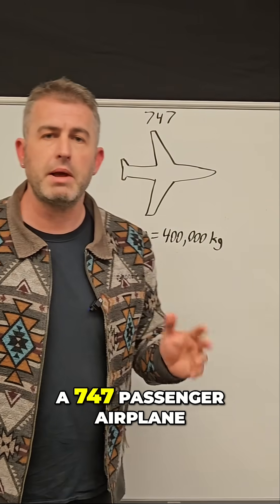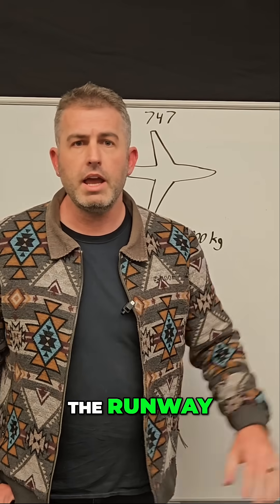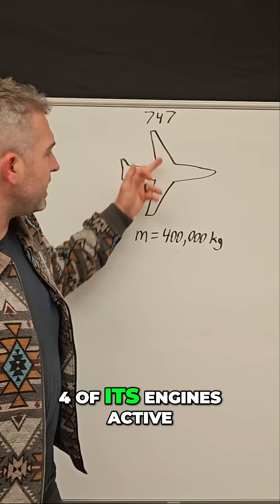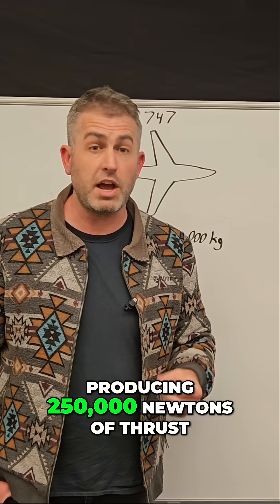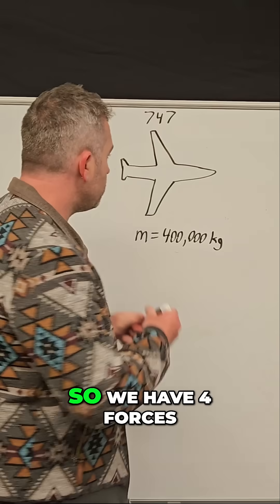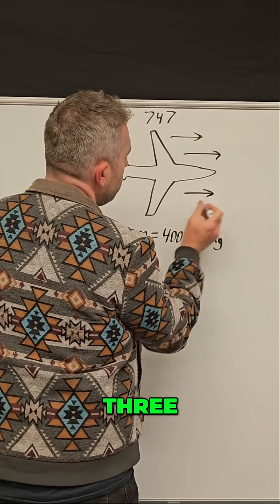This is a 747 passenger airplane taking off from the runway with all four engines active, each producing 250,000 newtons of thrust. So we have four forces: one, two, three, four.